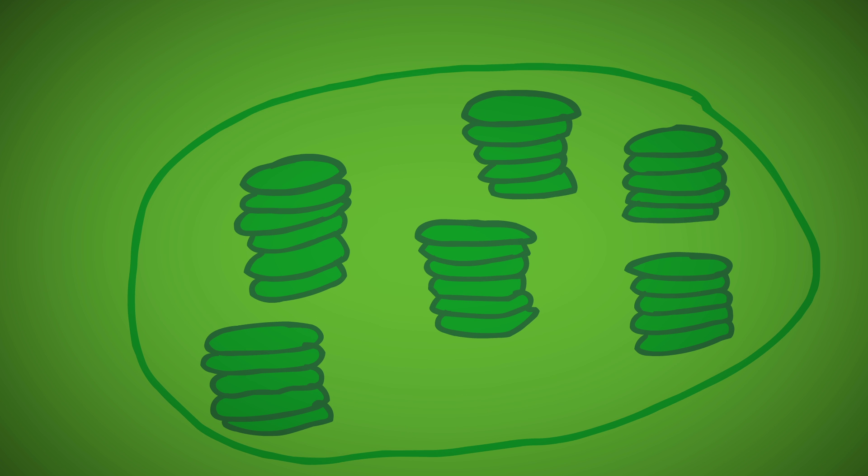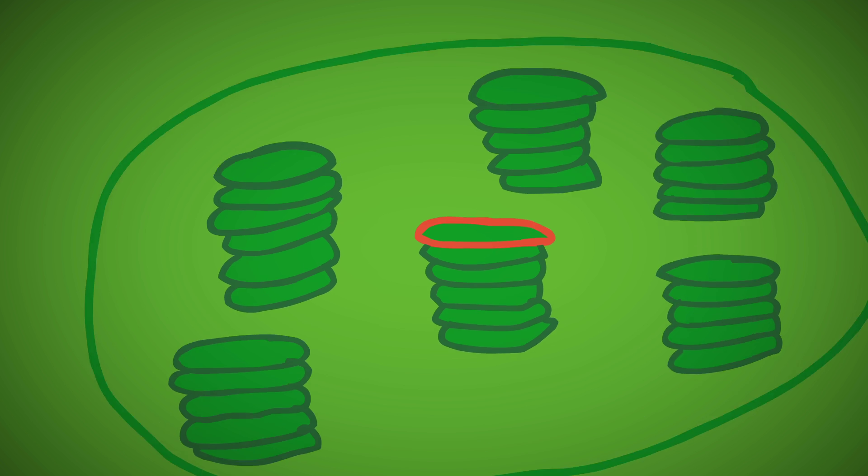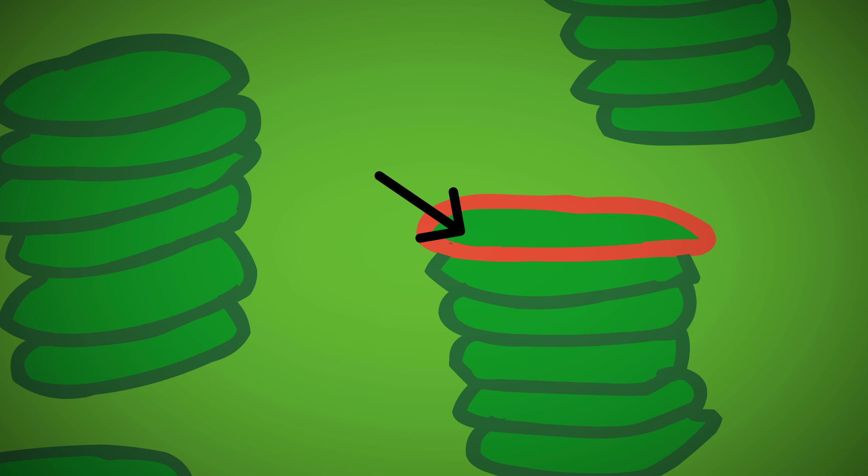Inside the chloroplasts are stacks of little sacs with green material inside. Each sac is called a thylakoid. The outside of the sac is called the membrane, and the inside is filled with chlorophyll.